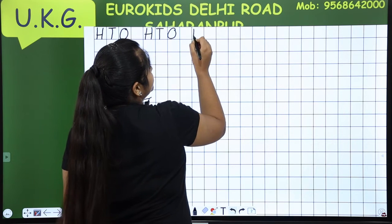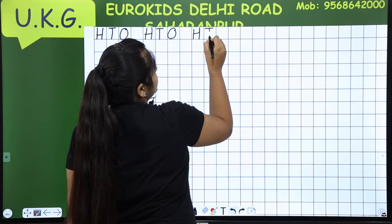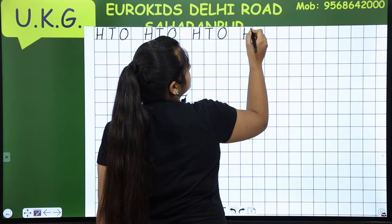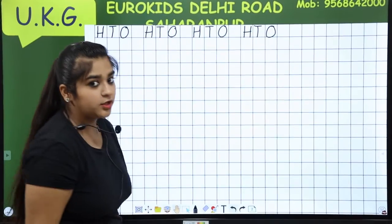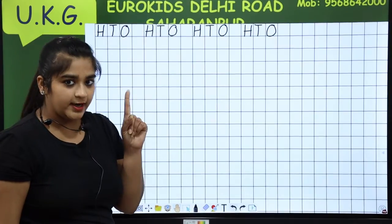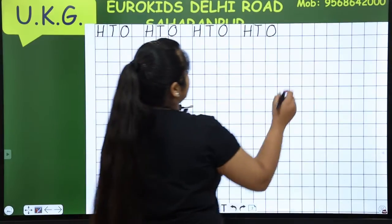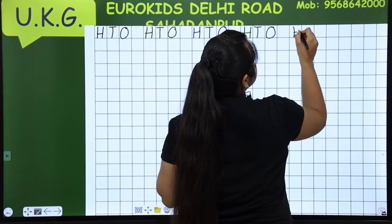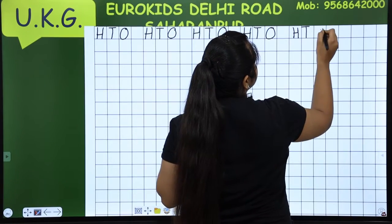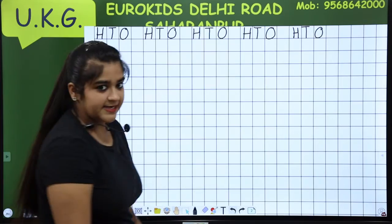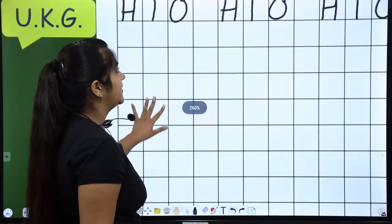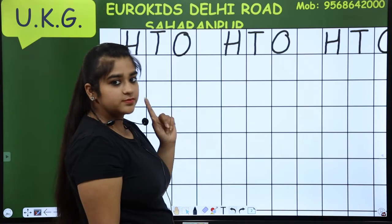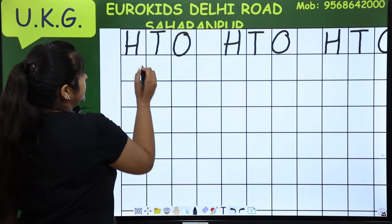And what does it mean? HTO ka meaning kya hota hai? O means ones, T means tens and H means hundreds. Thik hai, ab start kare hai, counting likhna. Yes, let's start. We have to write counting from 751. Thik hai, start kare hai.